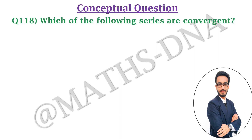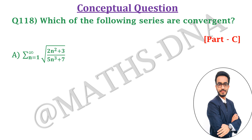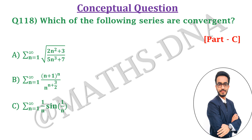In this video, we are going to discuss a question of real analysis. The question is: which of the following series are convergent? The options are: (a) summation n from 1 to infinity of √(2n²+3)/(5n³+7), (b) summation n from 1 to infinity of (n+1)^n / (n^n · n^(3/2)), (c) summation n from 1 to infinity of (1/n)·sin(1/n), and (d) all of them.